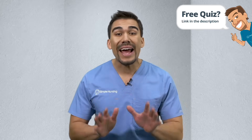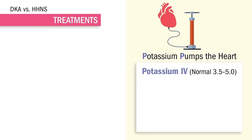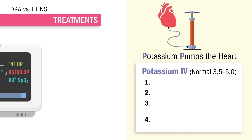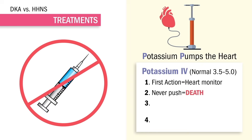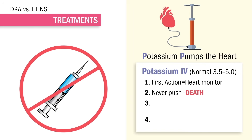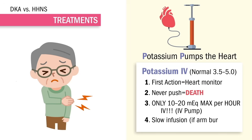If you need to replace potassium via IV, never push potassium IV — this means instant death. Always give it via IV bag over one hour or more — never 30 or 45 minutes. The four rules of potassium: number one, place patient on a heart monitor; number two, never push potassium; number three, only 10 to 20 mEq max per hour over a full 60 minutes or more; number four, always use an IV pump — never a solo drip. Slow the infusion if the arm starts burning.